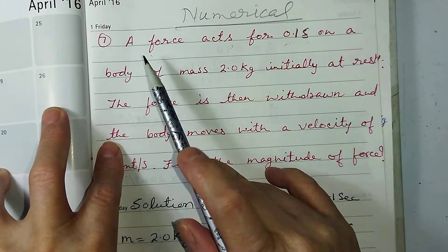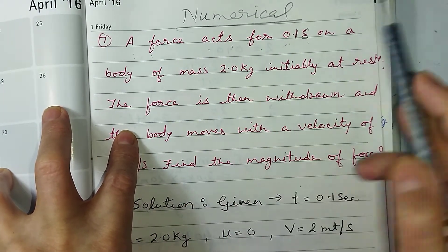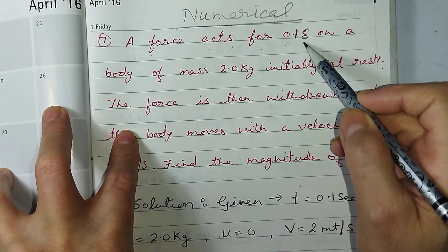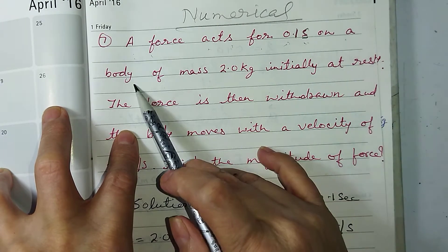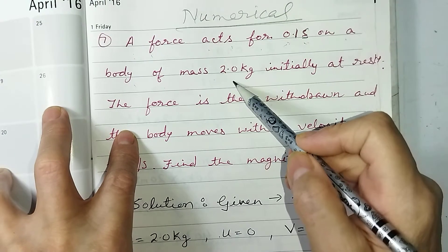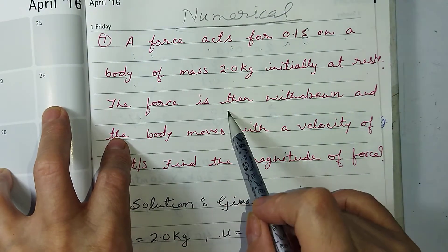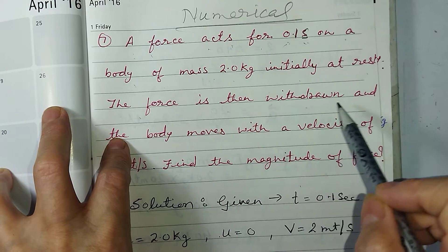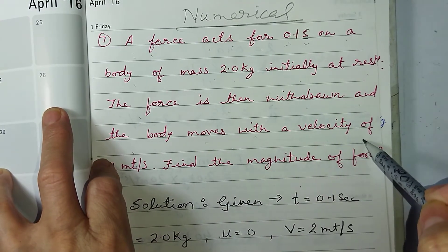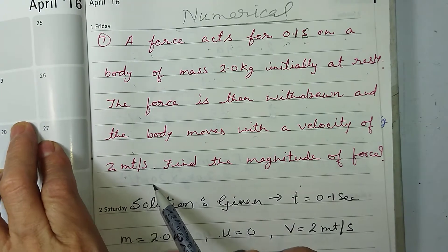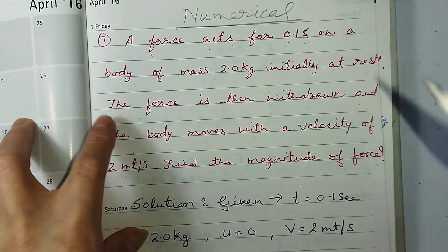Question is: a force acts for 0.1 second on a body of mass 2 kg, initially at rest. The force is then withdrawn and the body moves with a velocity of 2 meter per second. Find the magnitude of force.